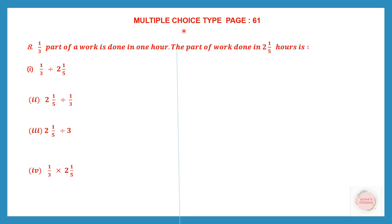The multiple choice type question is on page number 61 and we are with question 8. One-third of a work is done in 1 hour. The part of the work done in 2⅕ hours is?